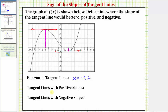Now to determine where the tangent lines would have positive slopes and where they would have negative slopes, let's read this graph from left to right. Notice how to the left of this high point, over this interval, the function is going uphill from left to right, meaning the function is increasing, which means the slopes of the tangent lines would be positive. If we sketch the tangent line here, we can easily see it has a positive slope. To express this using interval notation, we would say the open interval from negative infinity to negative five. We use rounded parentheses because we do not include negative five, since at negative five the slope of the tangent line would be zero.